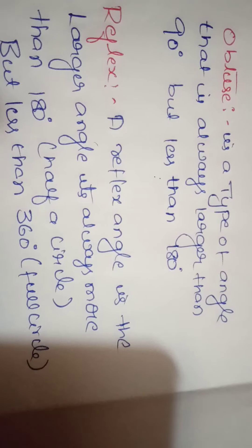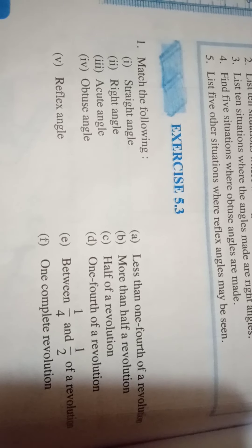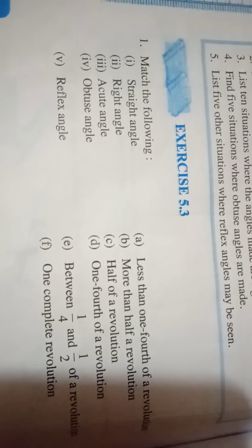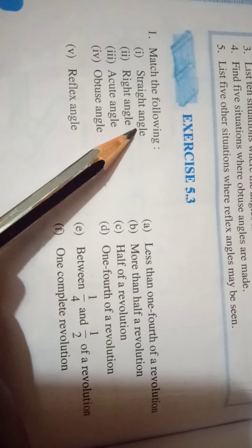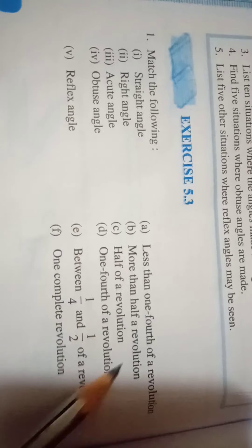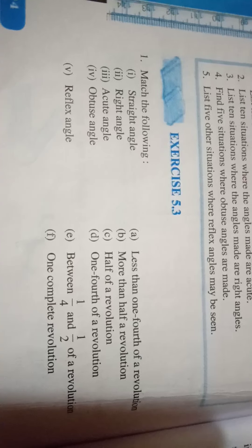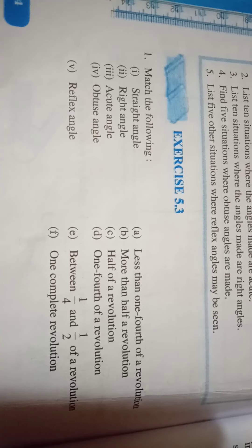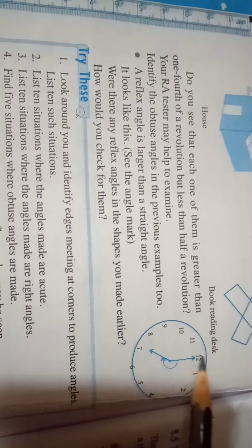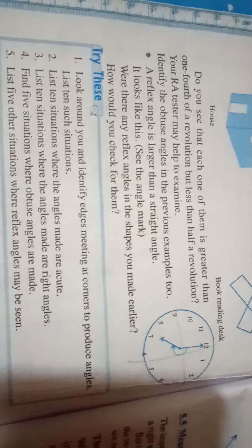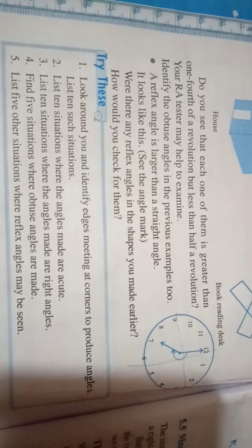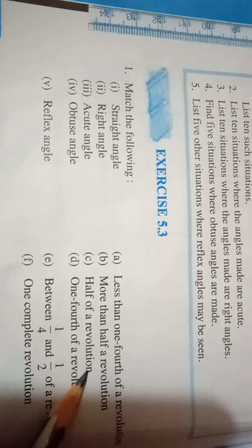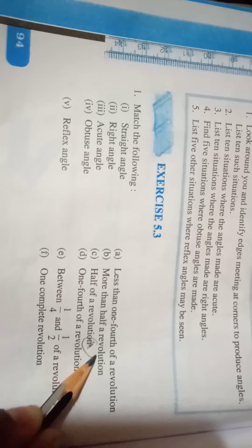Exercise 5.3: Match the angles. Here is Column A and Column B. Straight angle — match the angle. Half of a revolution is called 180 degrees. A straight angle is 180 degrees. This is the first one.